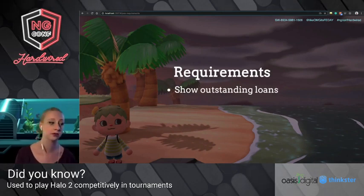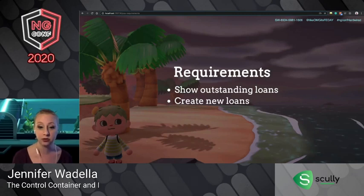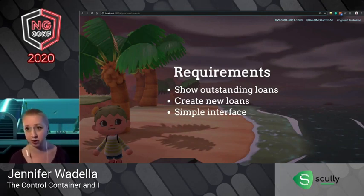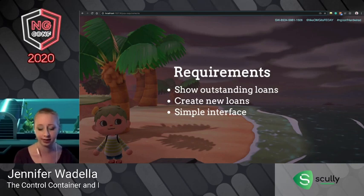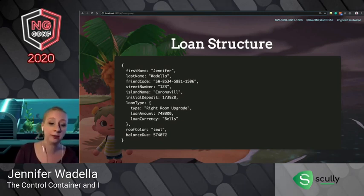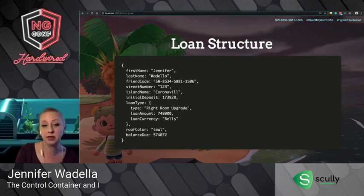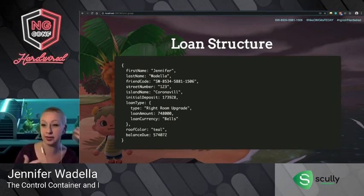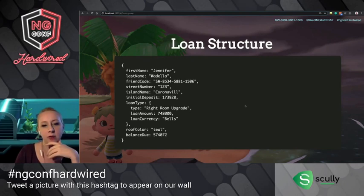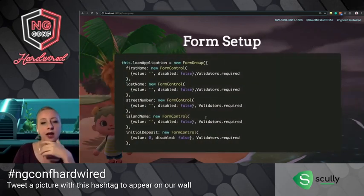Tom's got a couple of requirements: first, he wants the app to show outstanding loans so he can quickly see how much money everyone owes him. He also wants an easy way to create new loans with a simple interface. I've been around the block with Angular forms, so I go ahead and start working. I'll have a loan structure with the applicant's name, friend code, island, loan type, cost, initial deposit, and roof color.